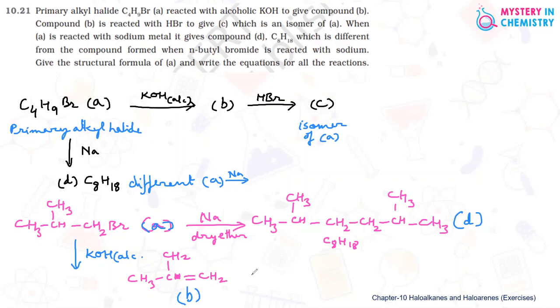And when it is treated with HBr, we should get C compound. So HBr, C compound. That means addition of HBr in presence of, not in absence of peroxide.